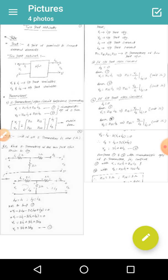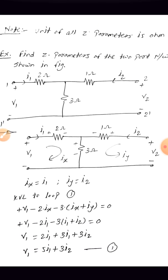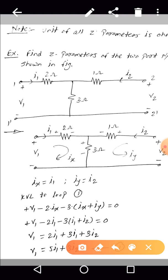Next, let us discuss one example. What we need to memorize is the characteristic equation of the Z parameter: V1 equals Z11·I1 plus Z12·I2, and V2 equals Z21·I1 plus Z22·I2. The task is: find the Z parameters of the two port network shown in the figure. This network has two ports — one port and a second port. The input port voltage is V1, input port current is I1, output port voltage is V2, and output port current is I2.